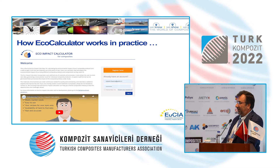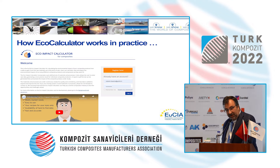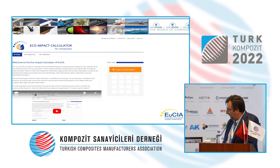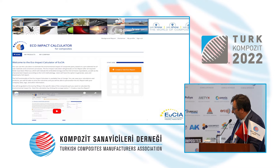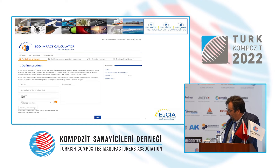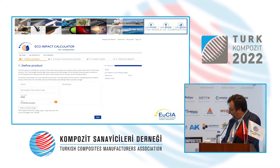To use the tool in practice, you go to the EcoCalculator homepage through the USHA Association website and register for free. You will receive a confirmation email, after which you can begin working — it's a one-minute process. Then you click the orange button to create a new EcoReport and define the name and mass of your product, for example a boat hull weighing 200 kilograms.